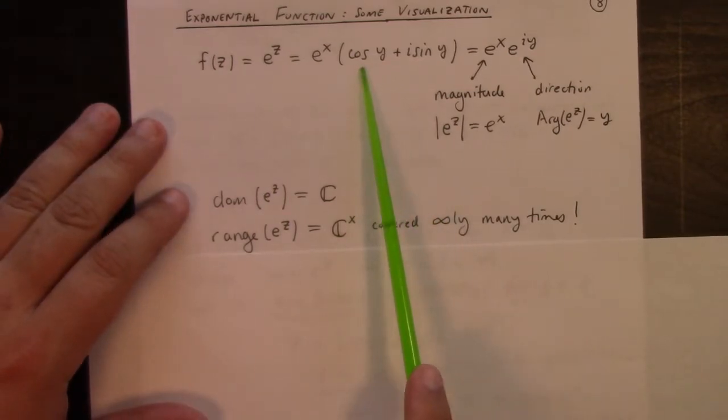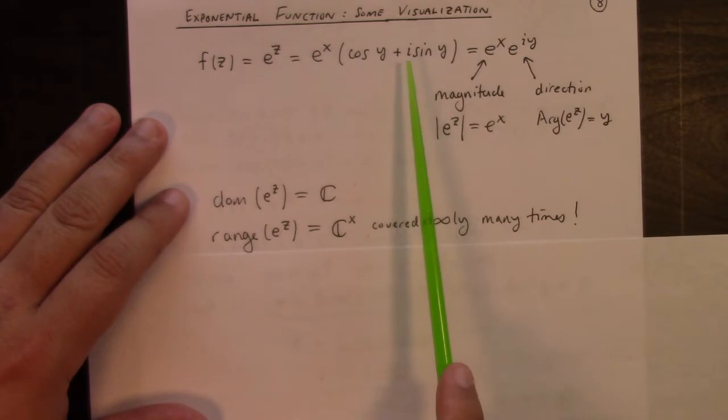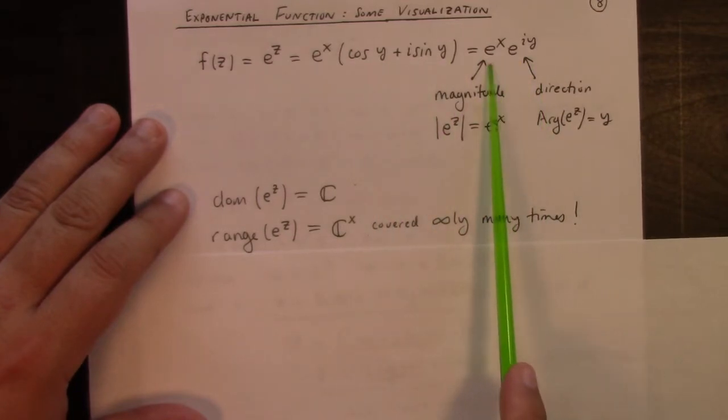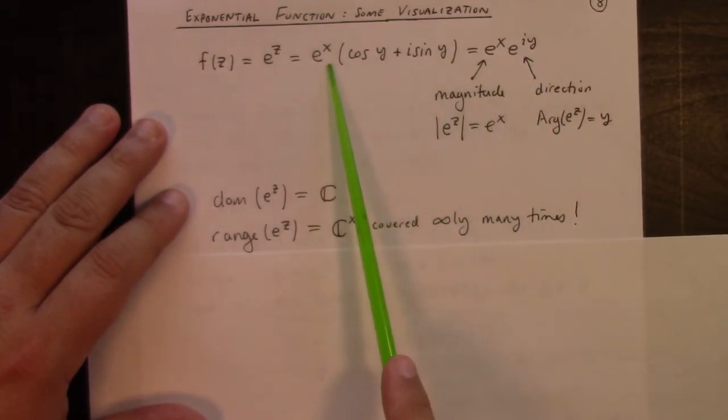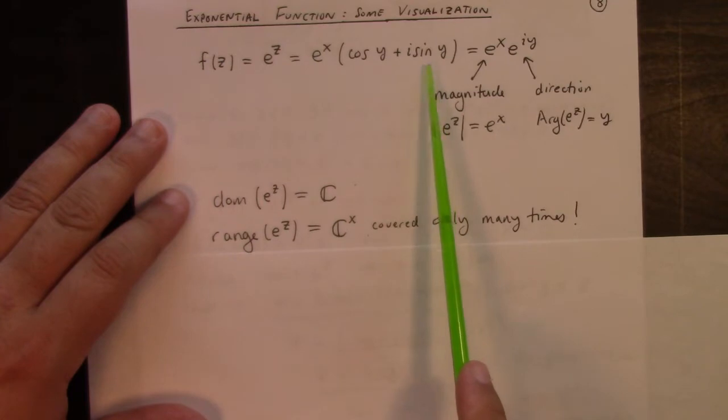e to the i y is cosine y plus i sine y, and you should know that there's no y for which both cosine and sine are both zero for the same y. So e to the i y is non-zero. Of course, e to the x is non-zero. It follows that the complex exponential is never zero.